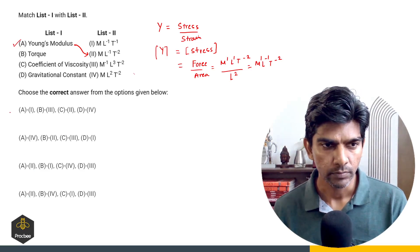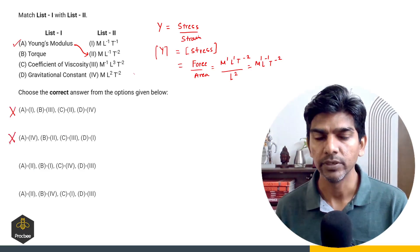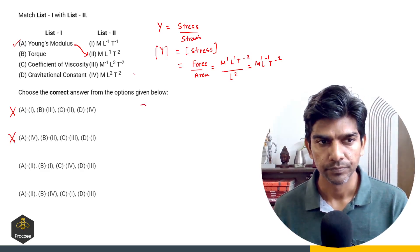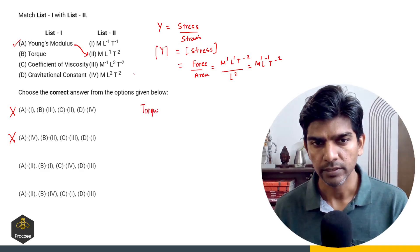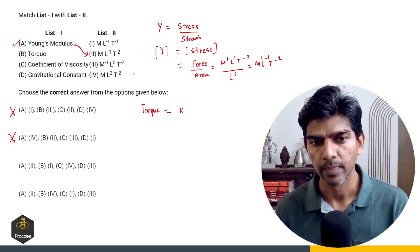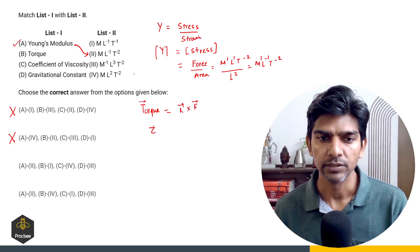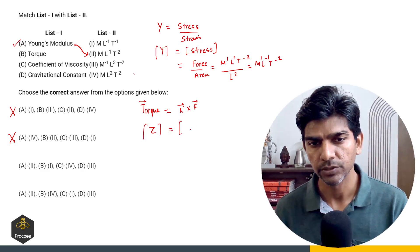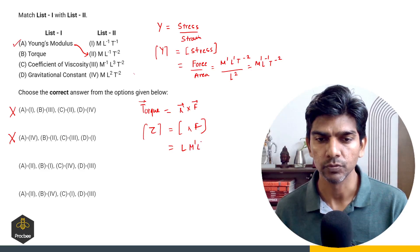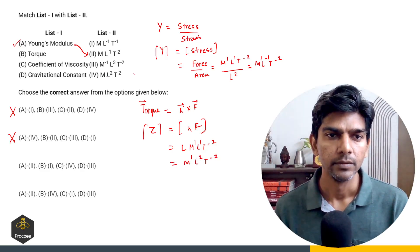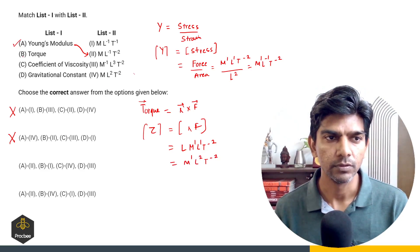Looking at the options, option A and option B can be eliminated because they have A corresponding to 1 and 4. Now let us see torque. Torque is R cross F in vector form. The dimension of torque is the dimension of R times F. R is length, force is M raised to power 1, L raised to power 1, T raised to power minus 2. So that gives M raised to power 1, L raised to power 2, T raised to power minus 2. So B corresponds to 4.